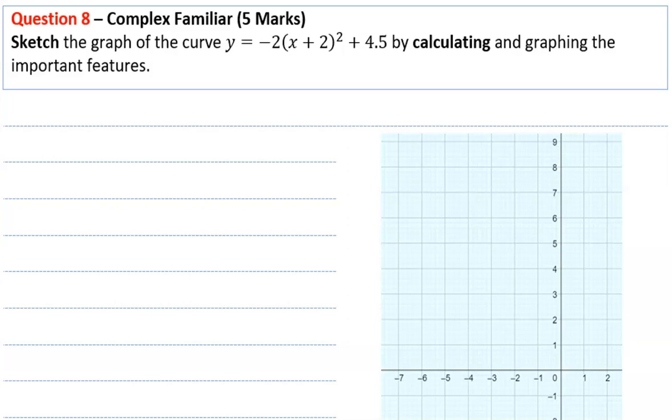Sketch the graph of the curve y equals negative 2 times x plus 2 squared plus 4.5 by calculating and graphing the important features. This equation is in the form a times x minus h squared plus k. So our turning point is the h and k value, which is negative 2 and 4.5.